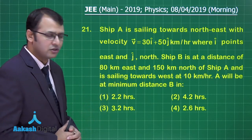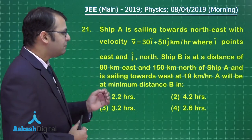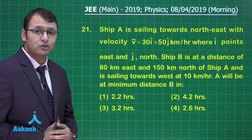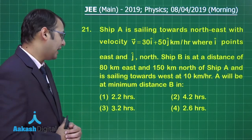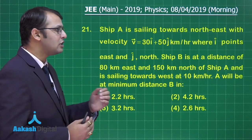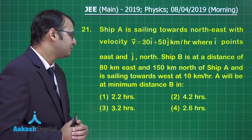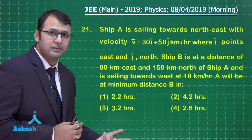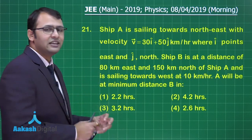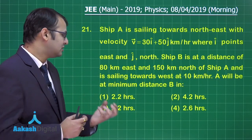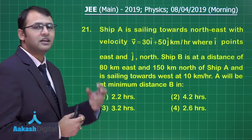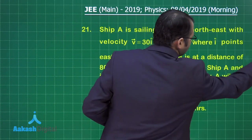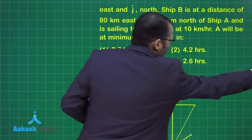Ship A is sailing towards northeast with velocity 30î + 50ĵ km/h, where î points east and ĵ points north. Ship B is at a distance of 80 km east and 150 km north of ship A, and is sailing towards west at 10 km/h. We need to find when A will be at minimum distance from B.